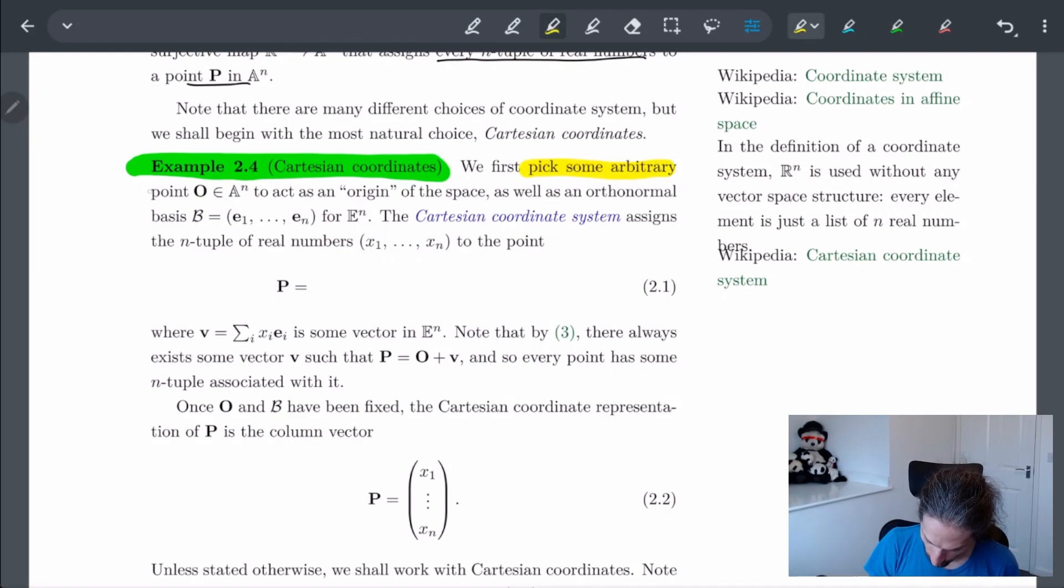Pick some arbitrary point O and we're going to say this is the origin. Now what we're going to do is we're going to say the Cartesian coordinate system will assign every n-tuple of real numbers. Remember, this is what we have to assign to a point.